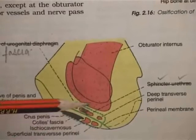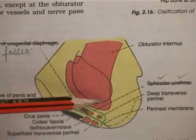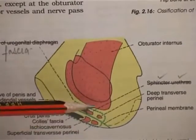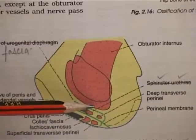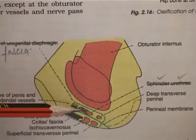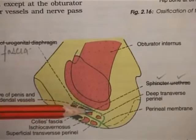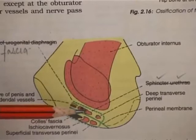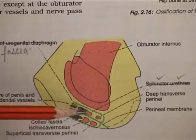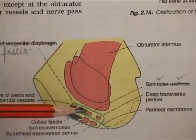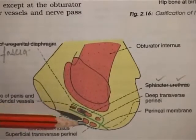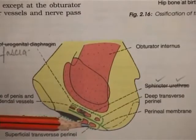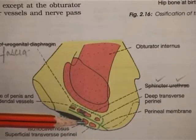The conjoint ischiopubic rami: the upper border provides attachment to the obturator membrane. The lower border gives attachment to fascia lata and Colles' fascia of the perineum. The inner surface is divided into three areas: the upper area close to the obturator foramen gives attachment to obturator internus. The upper ridge gives attachment to the endopelvic fascia. The middle area is related to the deep transversus perineum muscle and also to the dorsal nerve of the penis and internal pudendal vessels. The sphincter urethrae is no longer attached to the rami; it is within the wall of the urethra. The lower ridge gives attachment to the perineal membrane, and the lower area is related to the superficial transversus perineum muscle. Ischiocavernosus is attached and covers the crus penis.